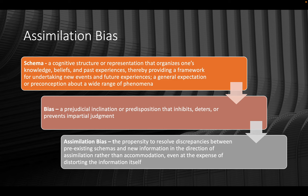In the cross-cultural domain, schemas can include perceptual sets about people based on age, gender, ethnicity, nationality, religion, or political affiliation — any characteristic we can possibly think of. Sometimes these schemas lead to bias, which is a prejudicial inclination or predisposition that inhibits or prevents an impartial judgment. This leads us to assimilation bias: the propensity to resolve discrepancies between pre-existing schemas and new information in the direction of assimilation rather than accommodation, even at the expense of distorting the information itself.